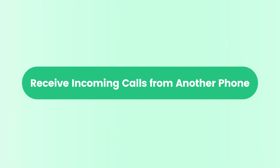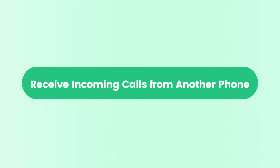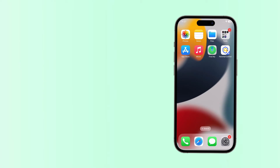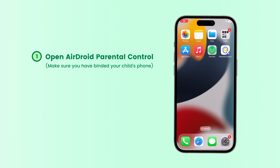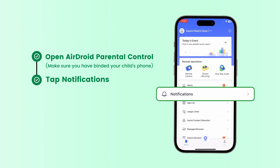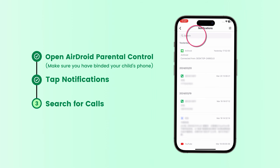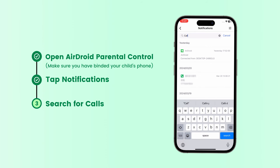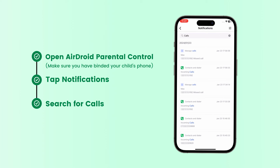To receive incoming calls from another phone — for example, to receive your kids' incoming calls — open AirDroid Parent Control. Tap Notifications and search for calls. All calls with details your kids received are displayed on your phone.